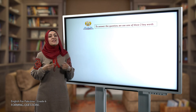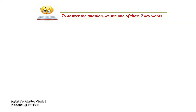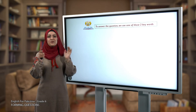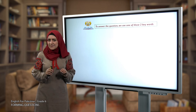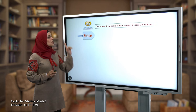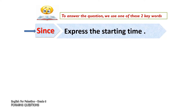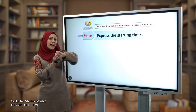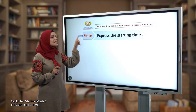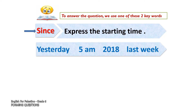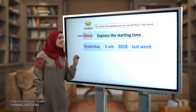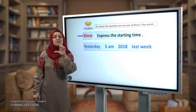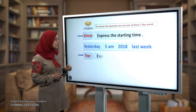Now let's answer the question. When we answer a question that starts with 'how long,' we use either 'since' or 'for.' These two keywords help us express the period of time, but they have different meanings. We use 'since' when we want to express the starting time — if you know when the action started, use 'since.' Examples: 'since yesterday,' 'since 5 a.m.,' 'since 2018,' 'since last week.'